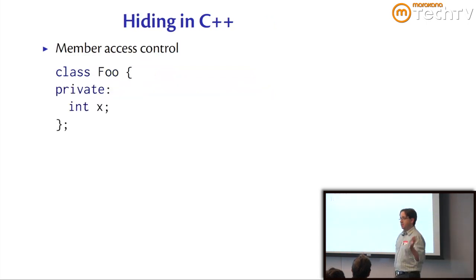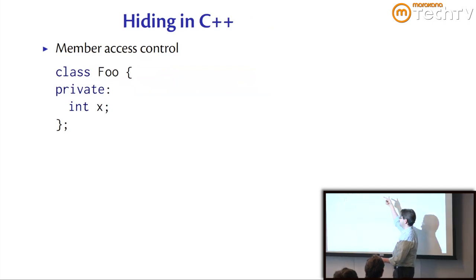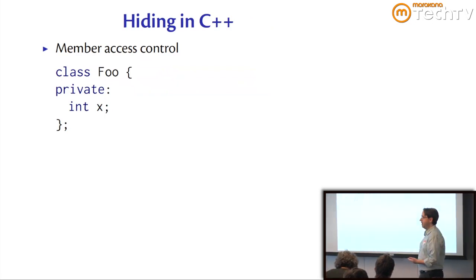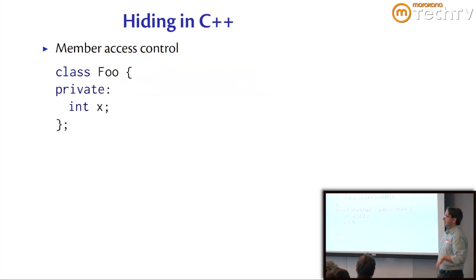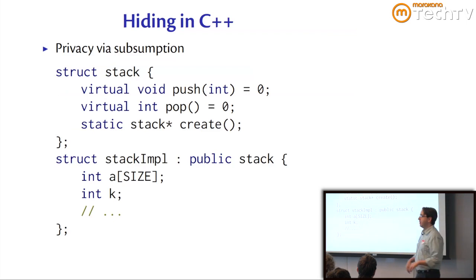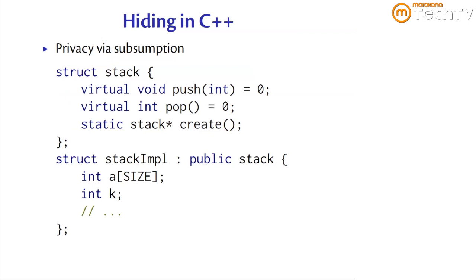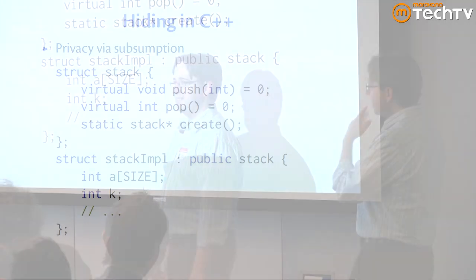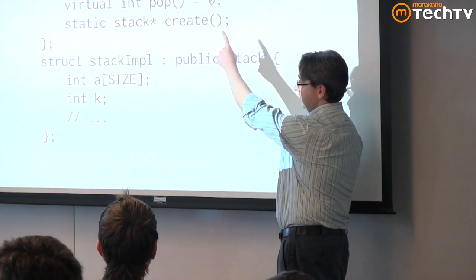There's other kinds of hiding besides type abstraction. In most object-oriented languages we have classes which have private members, so private is a form of access control. Then there's another common technique which we can call privacy via subsumption, which just means that your private stuff doesn't really have to be marked private. If your interface doesn't have any private stuff but all the real work happens in some implementation class which is derived from that. Struct and class are interchangeable in C++. This is a common technique in object-oriented languages to have an interface class and an implementation class.